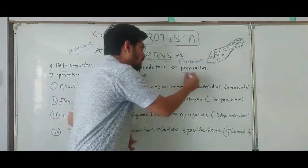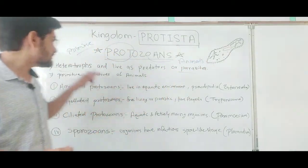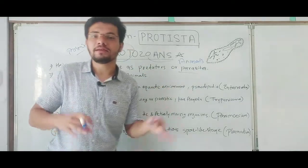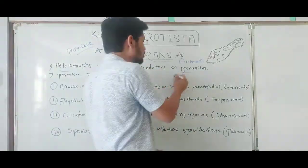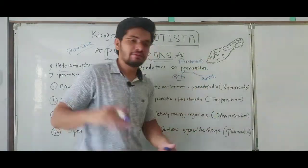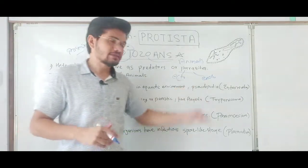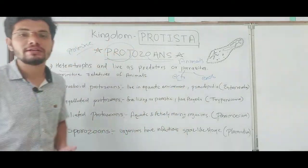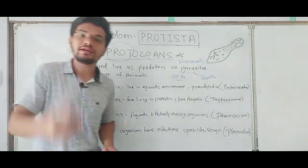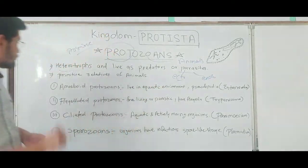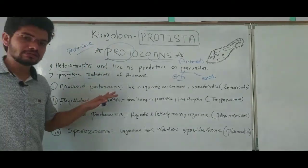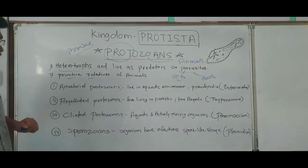Protozoans are heterotrophic and live as predators or parasites. In parasitic mode, they can be ectoparasites, meaning they live on the surface of the host, or endoparasites, meaning they live inside the cell or body of the host. They can cause disease in this way.